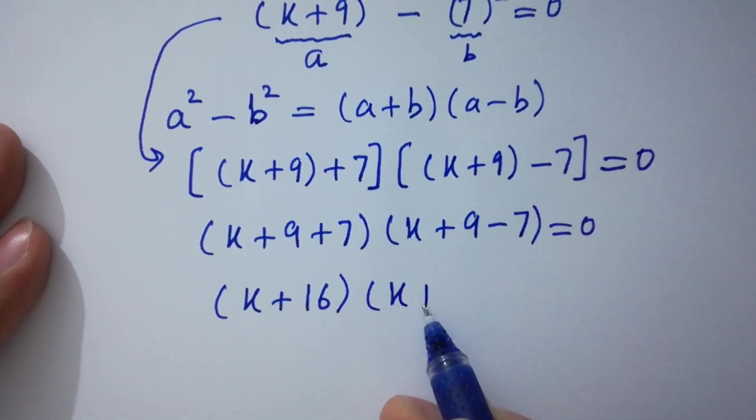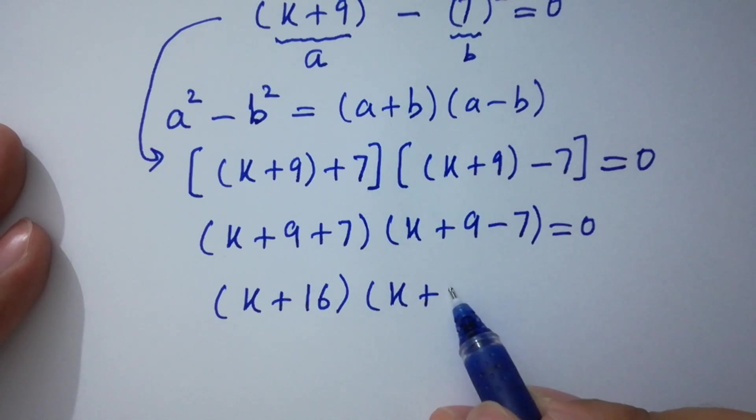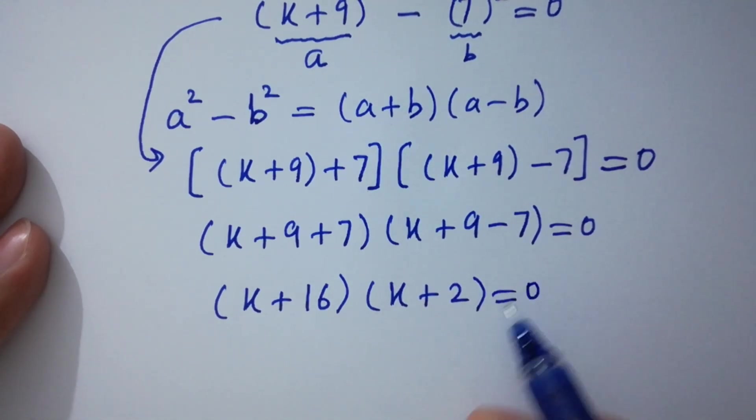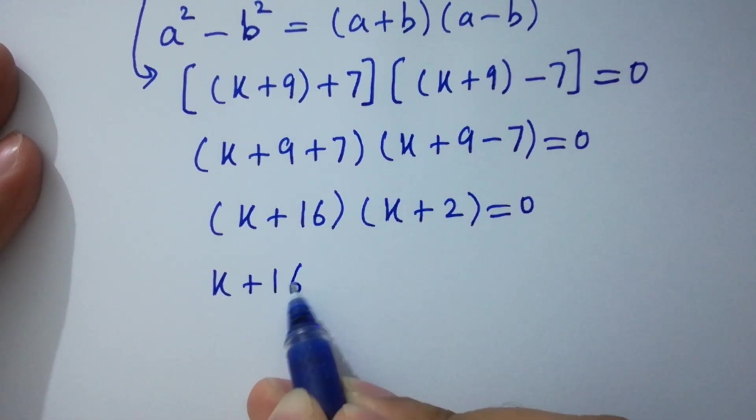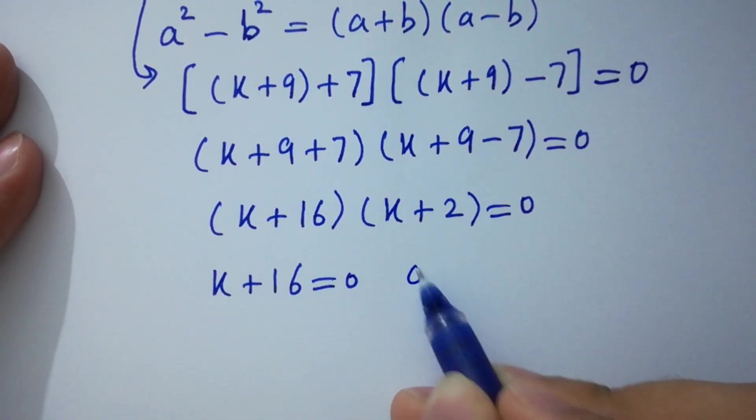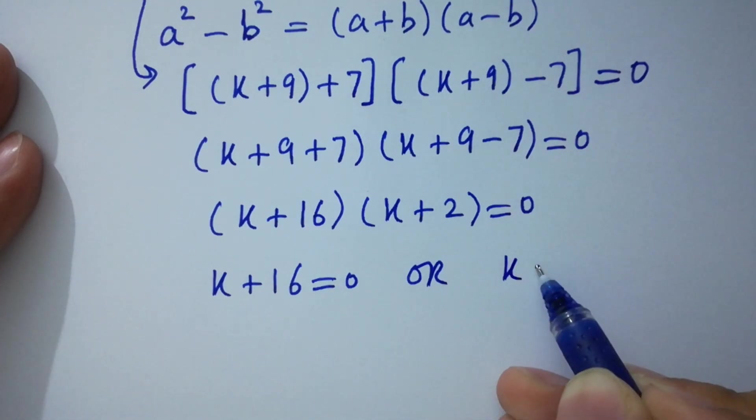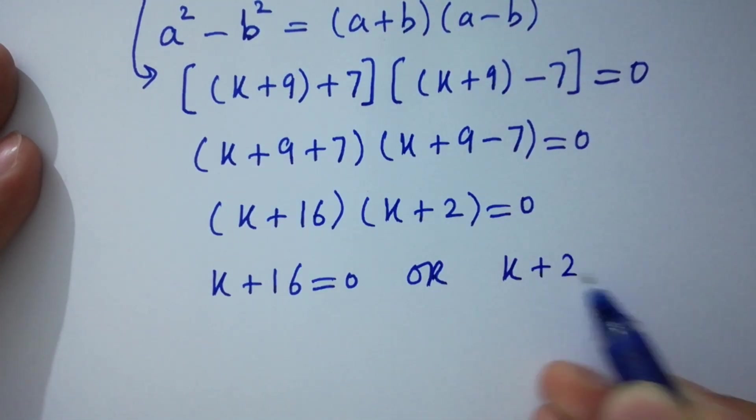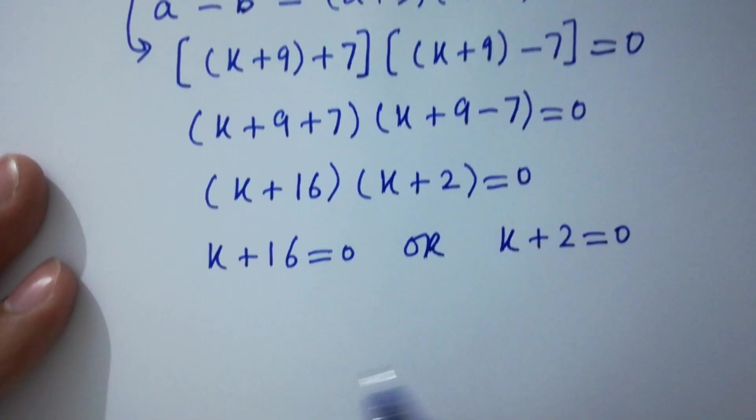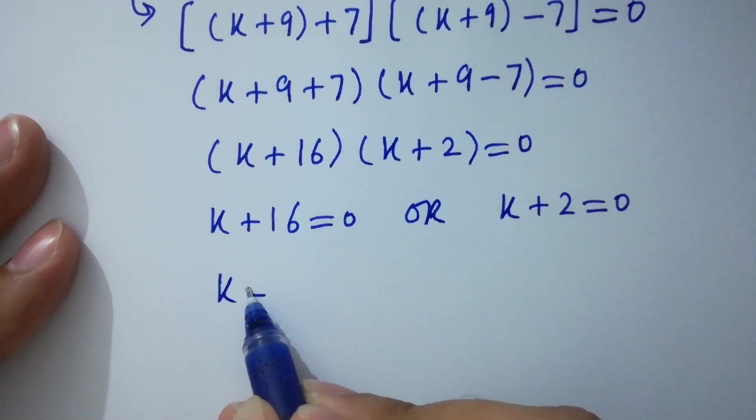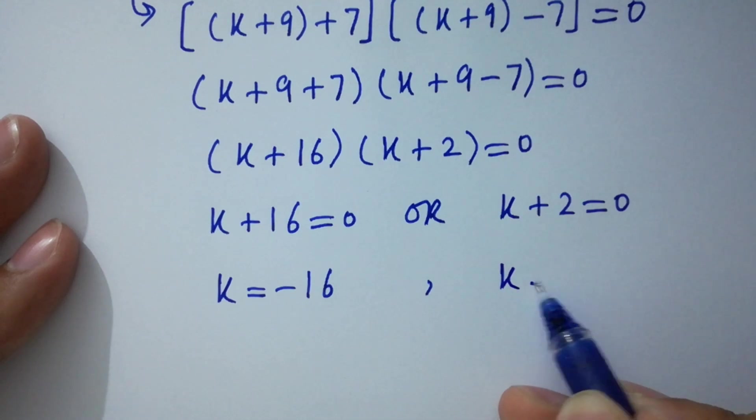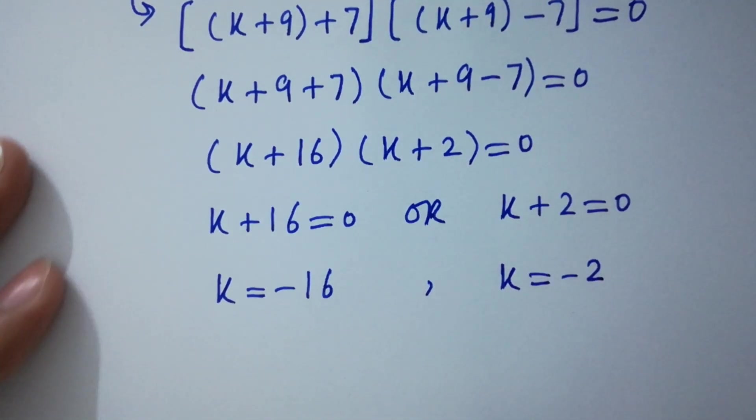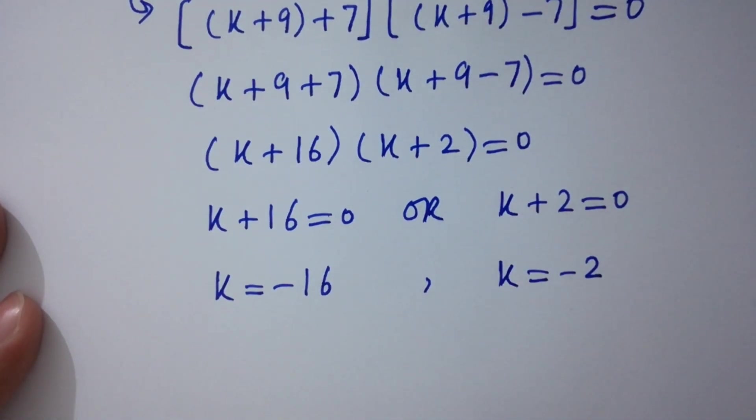And next, we have k + 9 - 7, we have 2 equal to 0. So either k + 16 = 0 or k + 2 = 0. We get k = -16 and here we get k = -2, which are values of k.